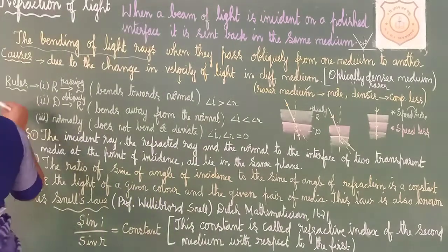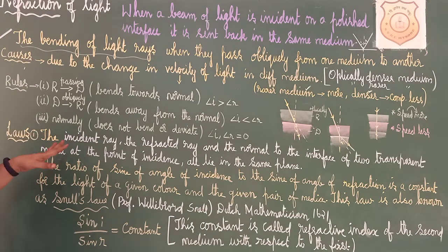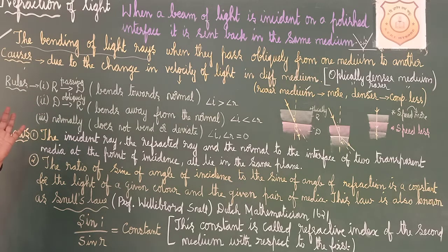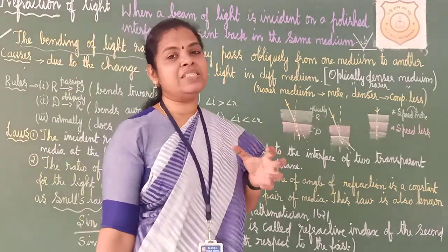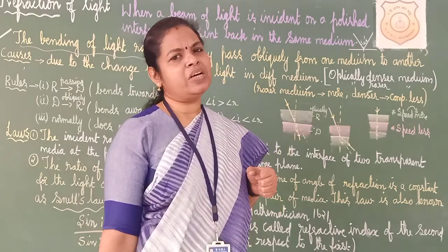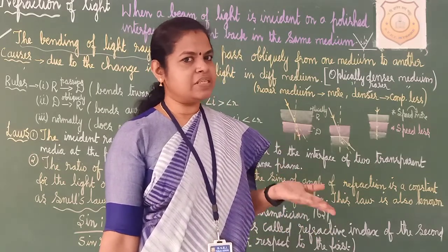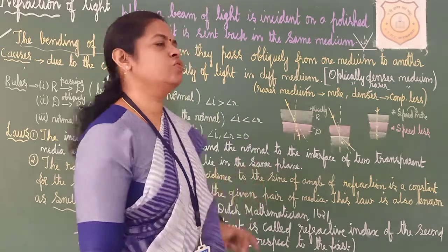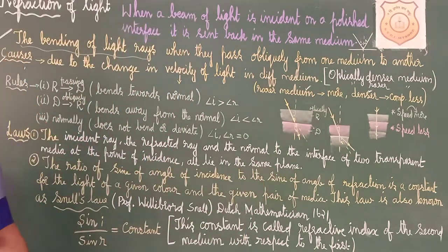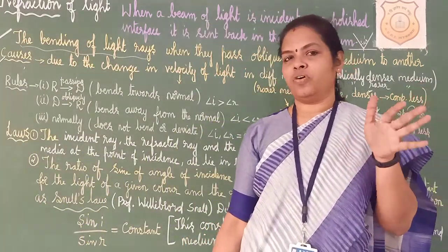So the first point is the definition: the bending of light rays when they pass obliquely from one medium to another is called refraction of light. The second point — the cause: it is because of the change in velocity. It may be in an optically denser medium or optically rarer medium. Rarer medium means speed of light is more; denser medium means speed of light is less.